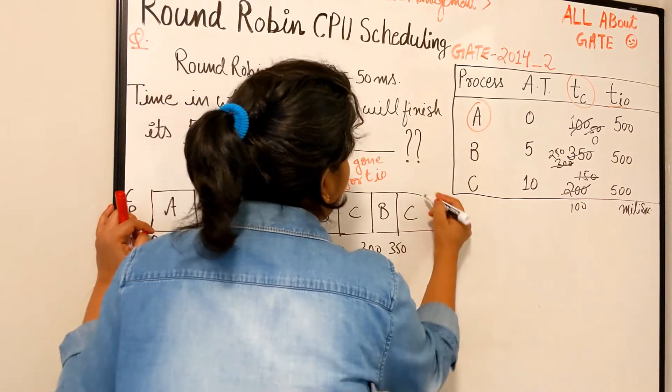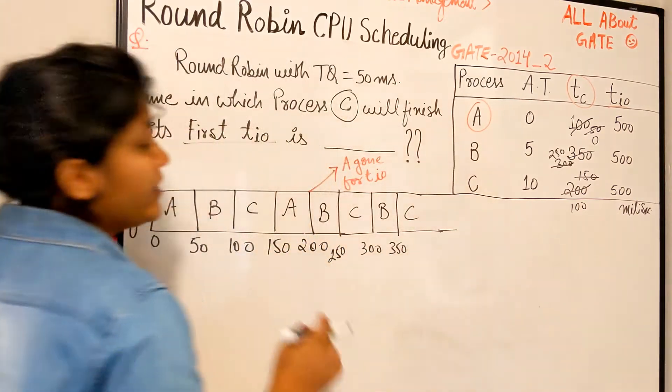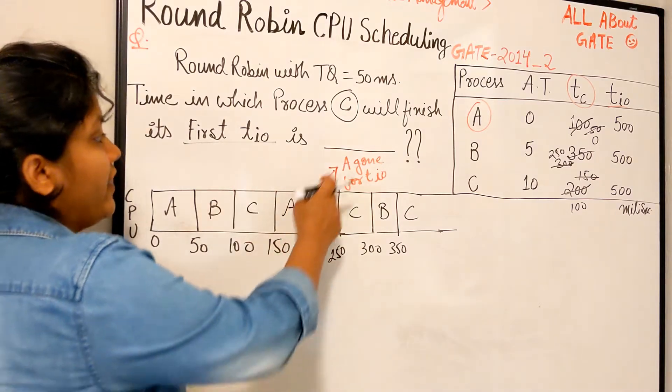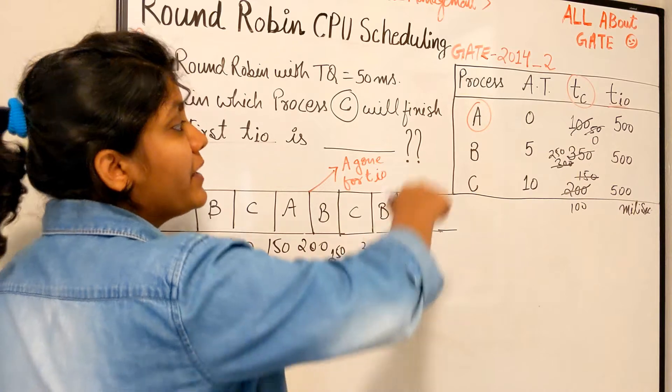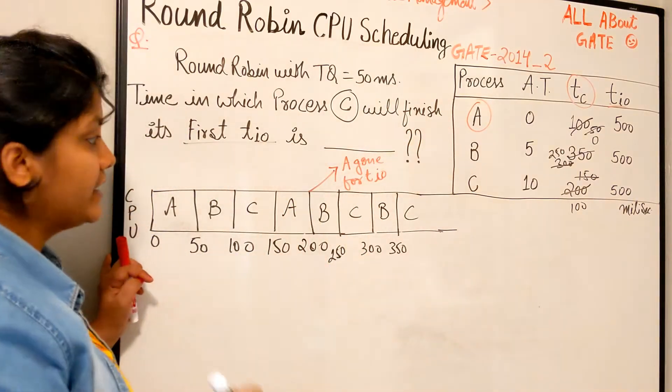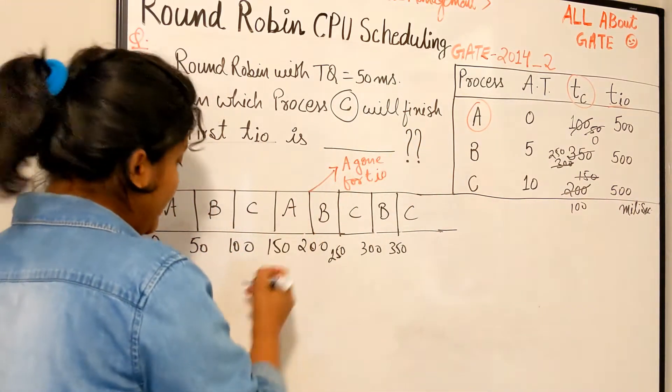Once again comes C, right guys? I hope you are following. Don't think that why A is not coming again, because A is performing its input-output operation for the 500 milliseconds. So it is going on in the IO.